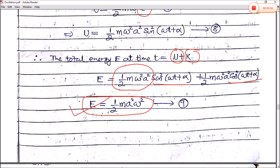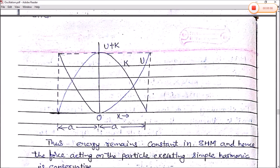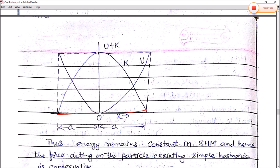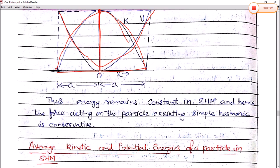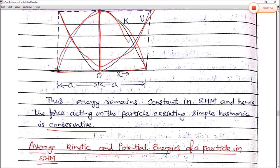This is the expression for the total energy of simple harmonic motion. If we plot the graph, we see that for displacement on the negative or positive x-axis, K and U are inversely proportional — when K increases, U decreases, and vice versa. Their sum defines the total energy of the system, which remains constant. Thus the energy is constant in simple harmonic motion, and hence the force acting on the particle is conservative in nature.